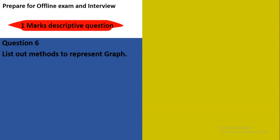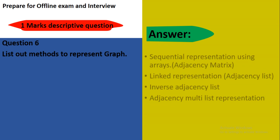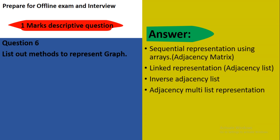Question number 6: List out methods to represent graph. Which methods are you using to represent the graph? The answer is: Sequential representation using arrays, that is adjacency matrix, is one way to represent the graph. Second is adjacency list. Then inverse adjacency list. And adjacency multi-list representation. These are the different ways to represent the graph.